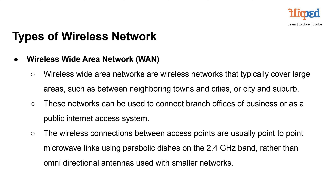The network's long-range connectivity is achieved through point-to-point microwave links, using parabolic dishes and directional antennas to establish reliable and focused wireless connections between access points over the 2.4 GHz band. Kindly take the time to thoroughly explore this comprehensive module, as it will undoubtedly contribute to a deeper and more comprehensive understanding of the subject matter.